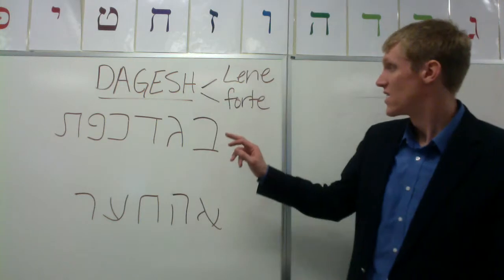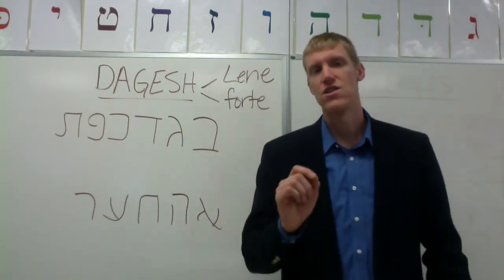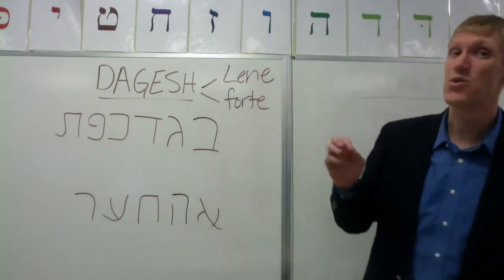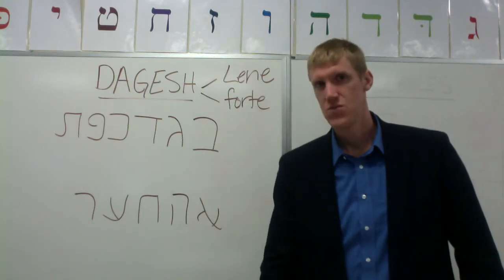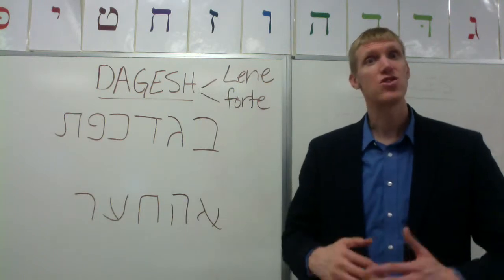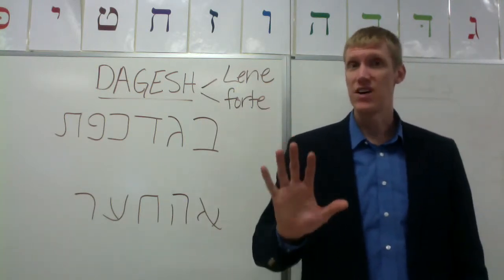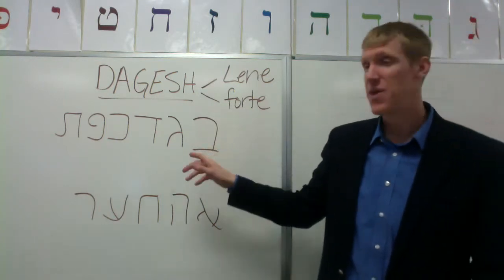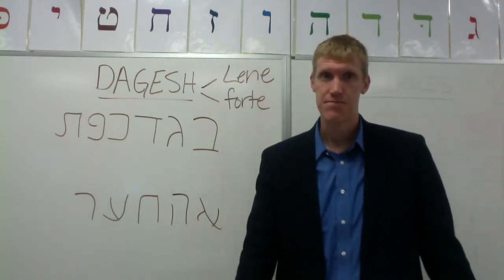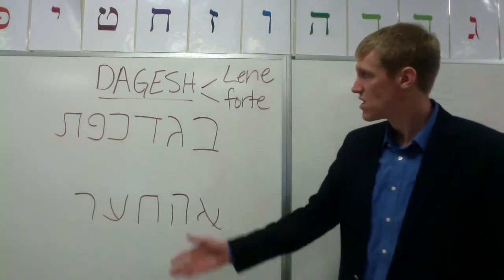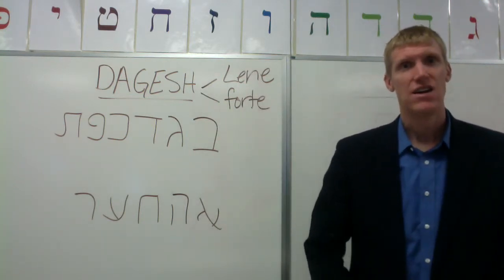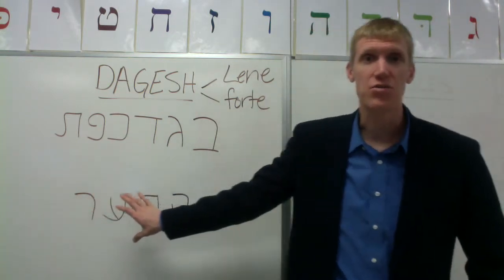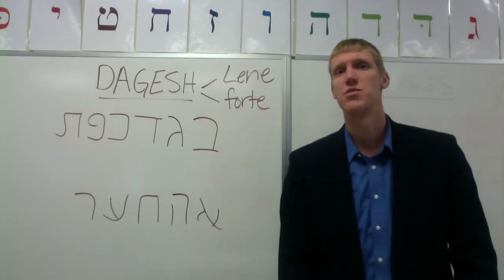It's important to note that dagesh forte, the doubling dagesh, always follows a vowel. Dagesh forte will not follow a closed syllable, unlike the dagesh lene, which can only follow a closed syllable or some kind of grammatical pause. This applies within a word, but also between words. So if one word ends with a vowel — an open syllable — and the next word begins with, say, a beit, that beit will not have a dagesh lene because it follows an open syllable. So that's the dagesh: dagesh lene and dagesh forte. The begad kefat letters are the only letters that can take a dagesh lene, and the five guttural letters reject the dagesh forte because they refuse to be doubled.